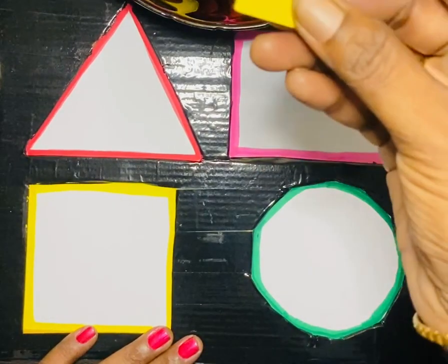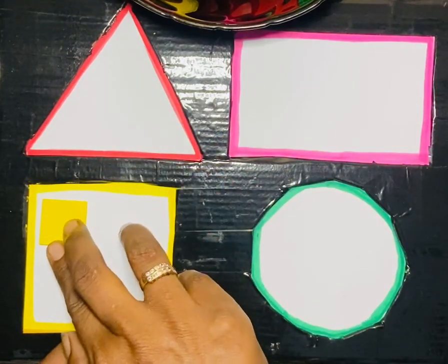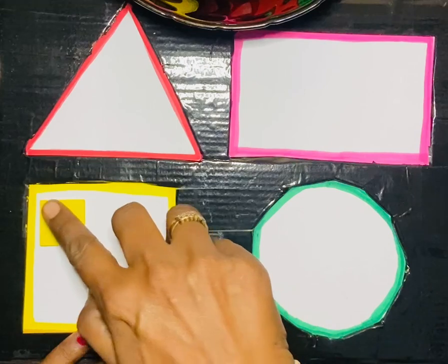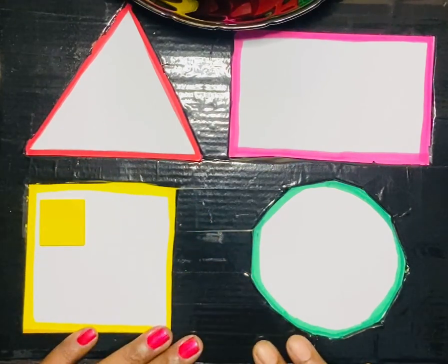See the first one. What is this? Square. Square has 4 sides and 4 corners. All the 4 sides are equal.